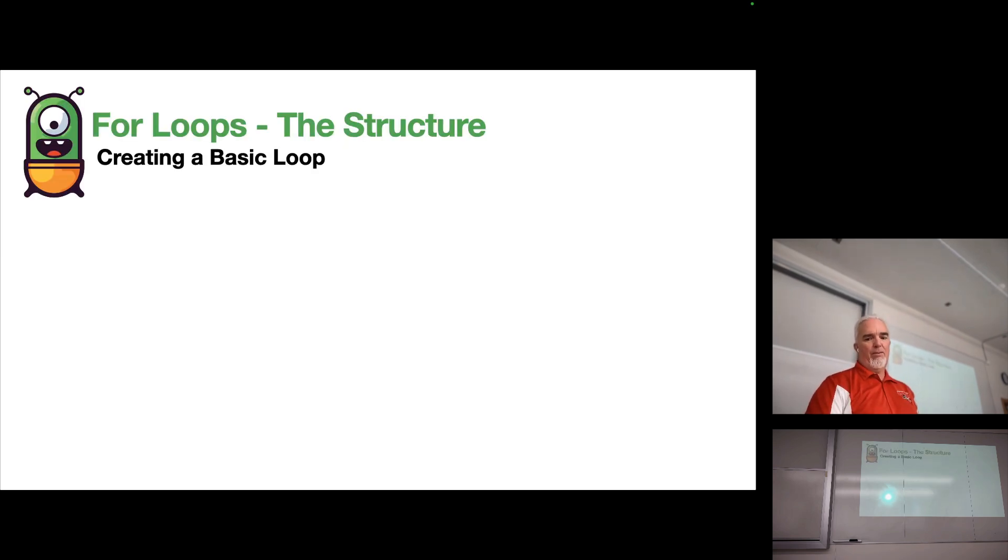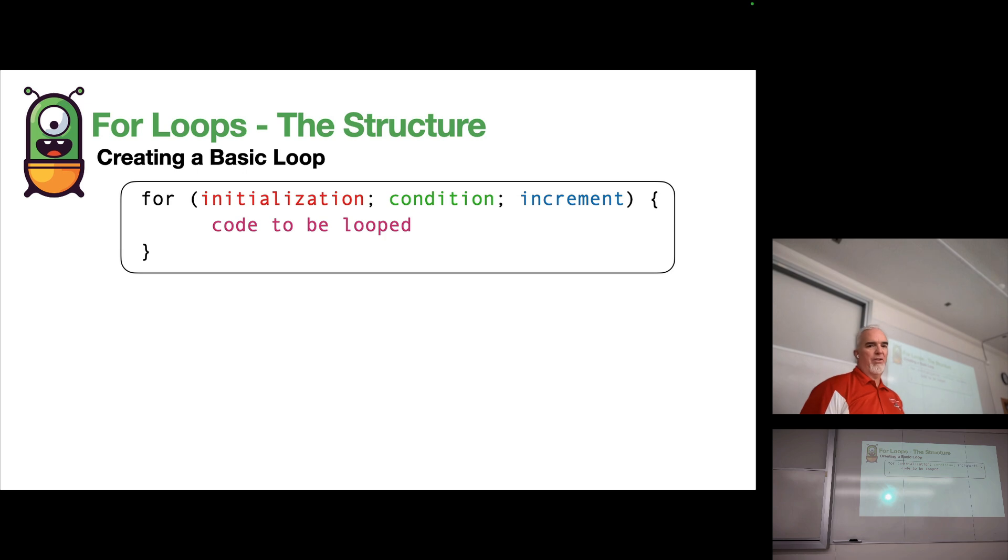In a for loop, we have a structure that looks something like this. We have the word for, and inside the parentheses, we have three arguments. Those arguments are called the initialization, the condition, and the increment.